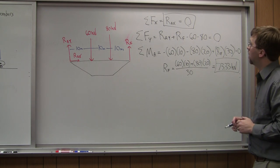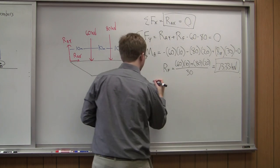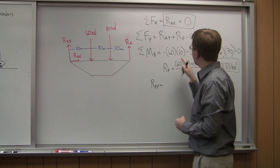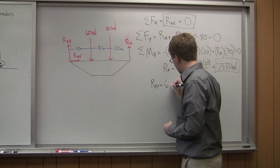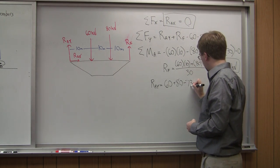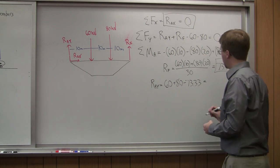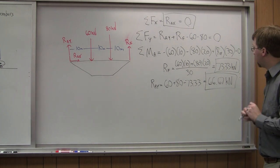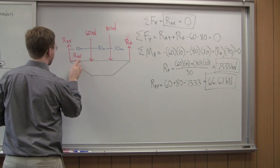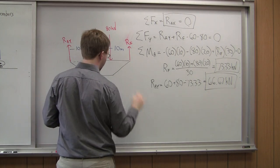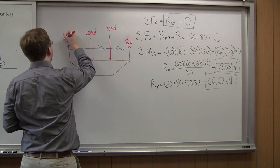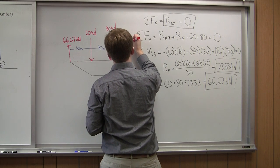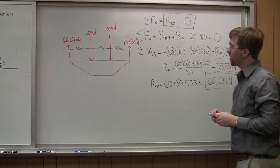Going back to the sum of forces in Y, RAY equals 60 plus 80 minus 73.33, which gives a final answer of 66.67 kilonewtons. So the reaction forces are: RAX = 0, RAY = 66.67 kN, and RF = 73.33 kN.